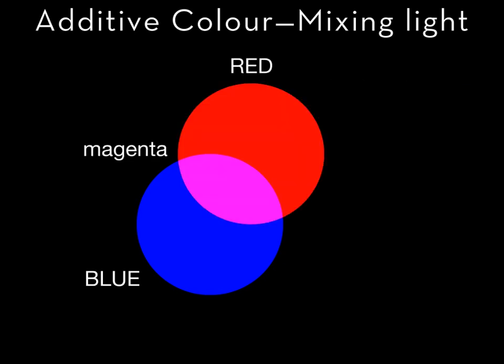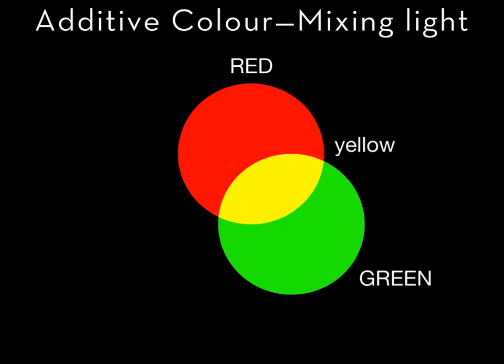When the red and blue cones are both stimulated we see magenta. Red light plus blue light produces magenta light. Magenta is a secondary additive color. When the red and the green cones are both stimulated we see yellow. Red light plus green light produces yellow light. Yellow is a secondary additive color.